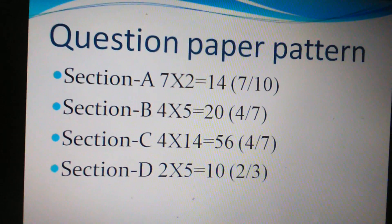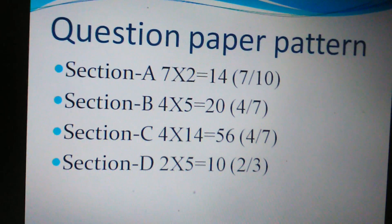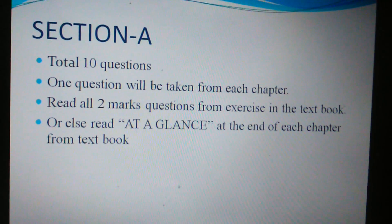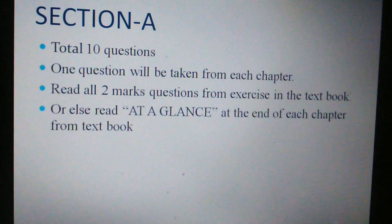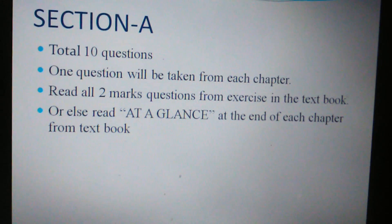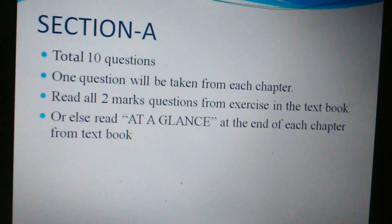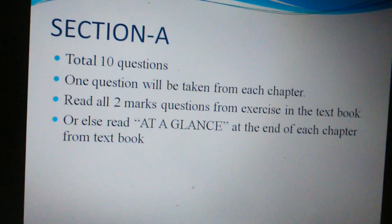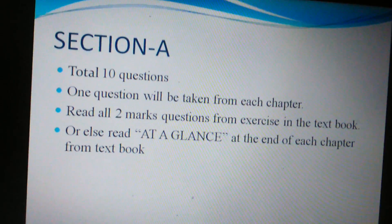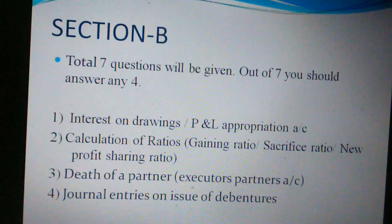We'll go through the sections in the question paper — Section A, B, C, and D. In Section A, a total of 10 questions will be given, all theory questions — one question from each chapter. Read all two-mark questions from the exercises in the textbook itself. Go through the textbook only; questions won't come from anywhere else. You can also go through the 'at a glance' section at the end of each chapter — 90% of questions will come from there.